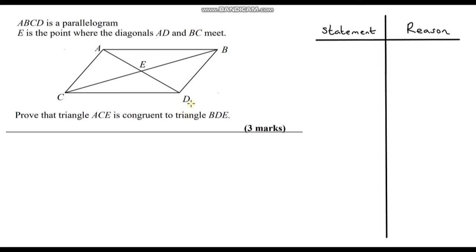We've got another question on the same topic. It says ABCD is a parallelogram again. E is the point where the diagonals AD and BC meet, which we can see on the diagram. We need to prove that triangle ACE is congruent to triangle BDE. I encourage you to pause the video first and see if you can have a go at this yourself.